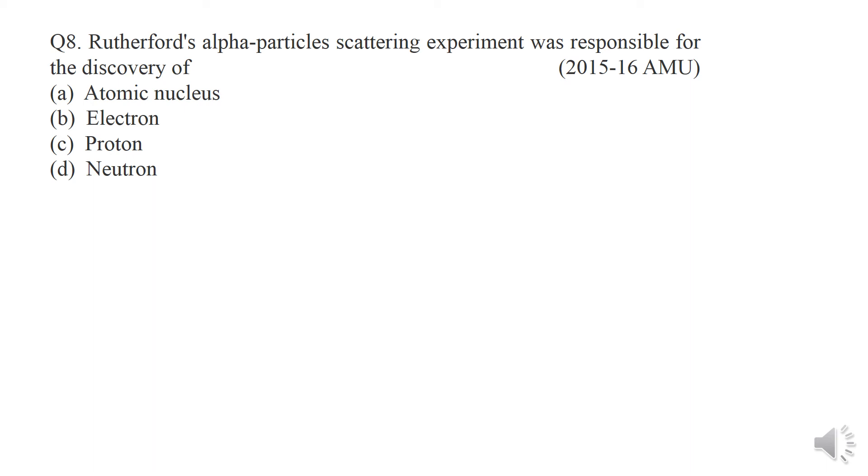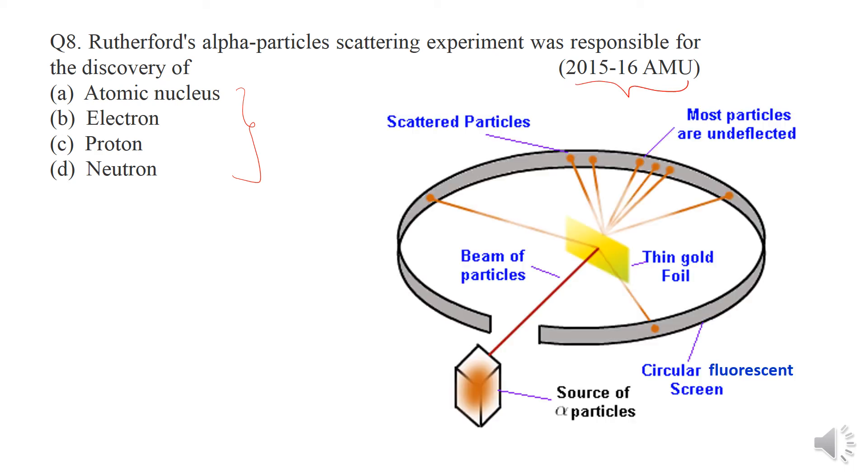Question 8: what did Rutherford's experiment discover - atomic nucleus, electron, proton, or neutron? If you remember, we had read about Rutherford's experiment. He used a source of alpha particles. Alpha particles were directed at thin gold foil.